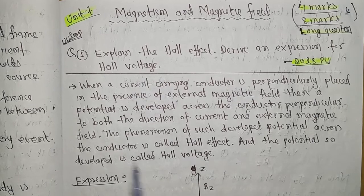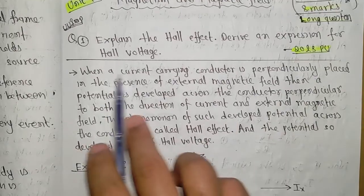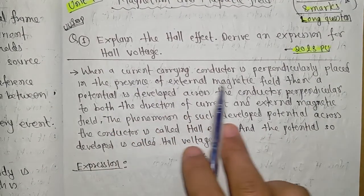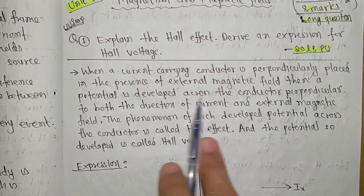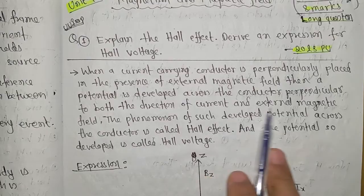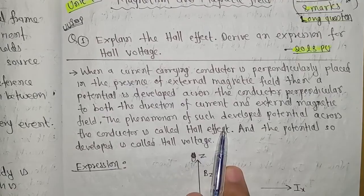Let's start with the Hall Effect. When a current carrying conductor is perpendicularly placed in the presence of an external magnetic field, then a potential is developed across the conductor perpendicular to both the direction of current and external magnetic field.